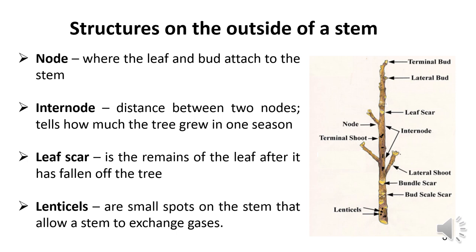The node is the part where the leaf and bud attach to the stem. The internode is the portion or distance between two nodes; it tells us how much the tree grew in one season. Leaf scar is the mark left by a leaf after it falls off the tree, marking the site where the petiole attached to the stem — it is just below the lateral bud, and if you look closely you can see the remains of vascular tissues. Lenticels are small spots or dots on the stem that allow gas exchange — oxygen and carbon dioxide — with the environment.